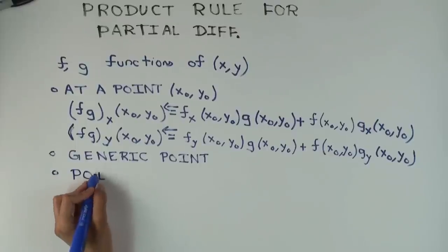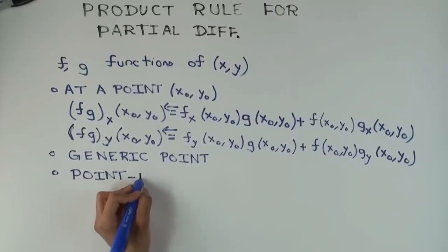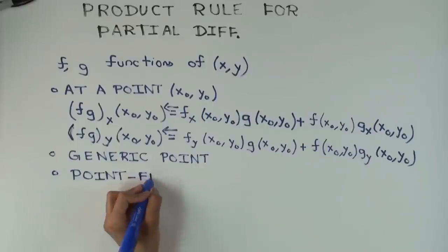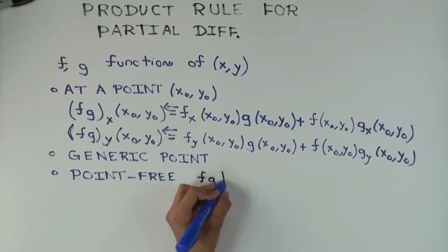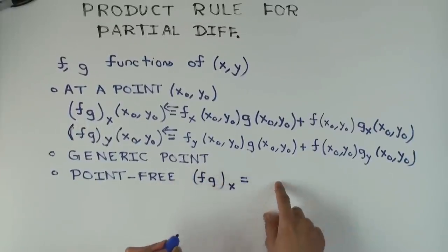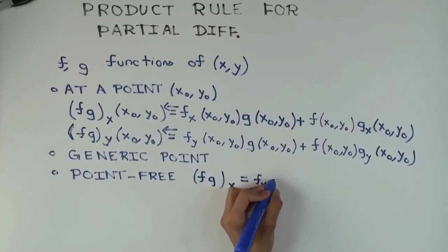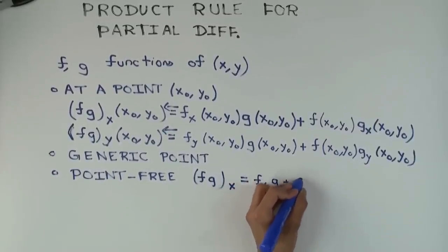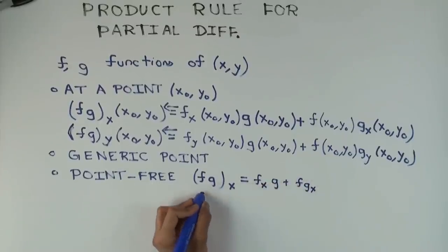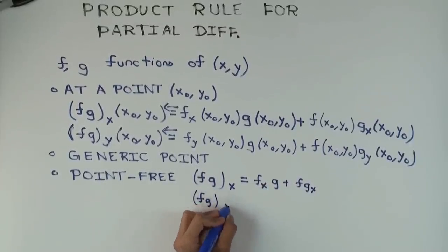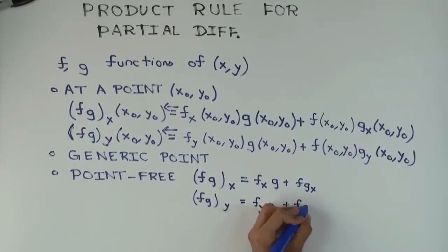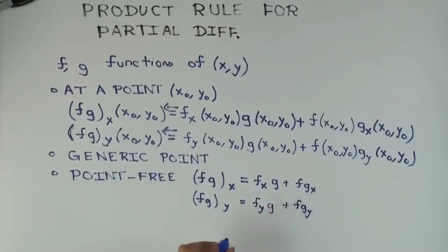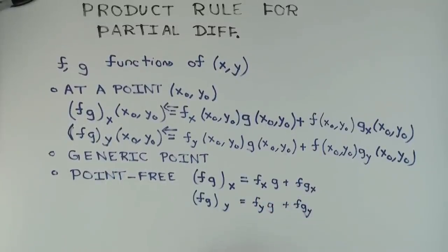The third version is the point free version. Point free means I don't write the points x, y, I just sort of assume that they're there. So this is a really short version. It says fg sub x is f sub x g plus f times g sub x. So that's the point free version.